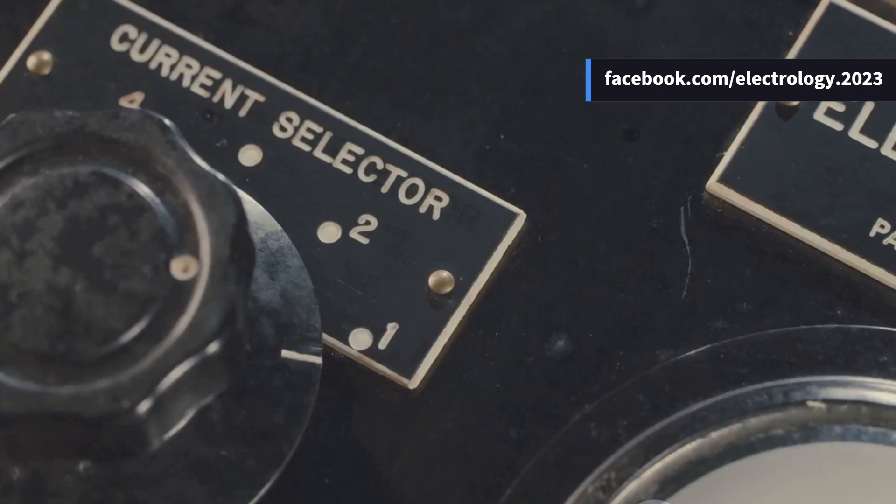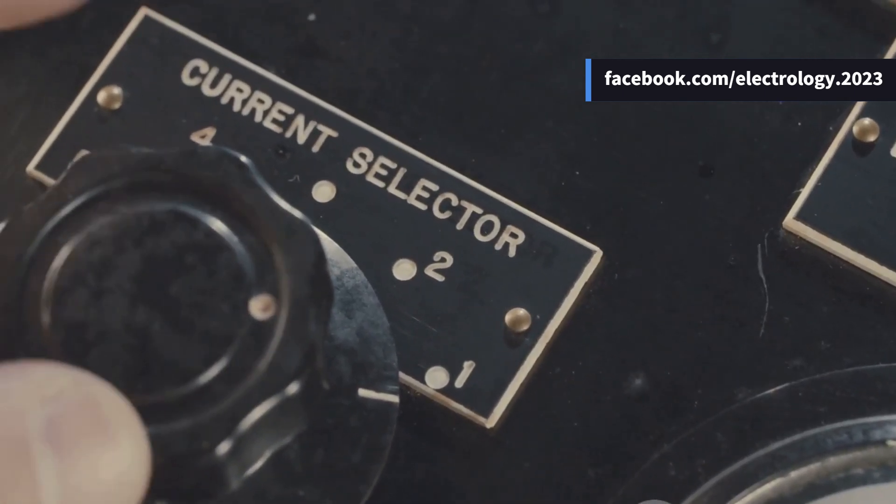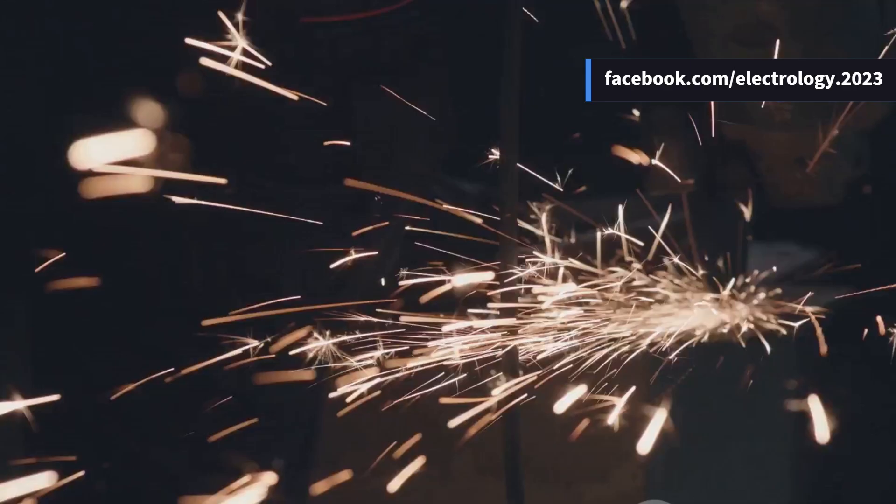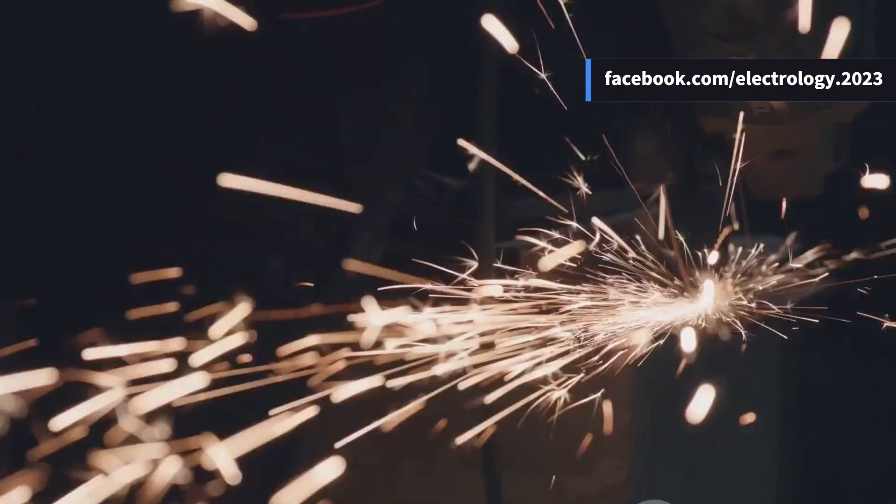Another major advantage of conducting a primary injection test is detecting loose connections. If there is a loose connection in the circuit, sparking may occur at the joint when the rated current is flowing during the primary injection test.